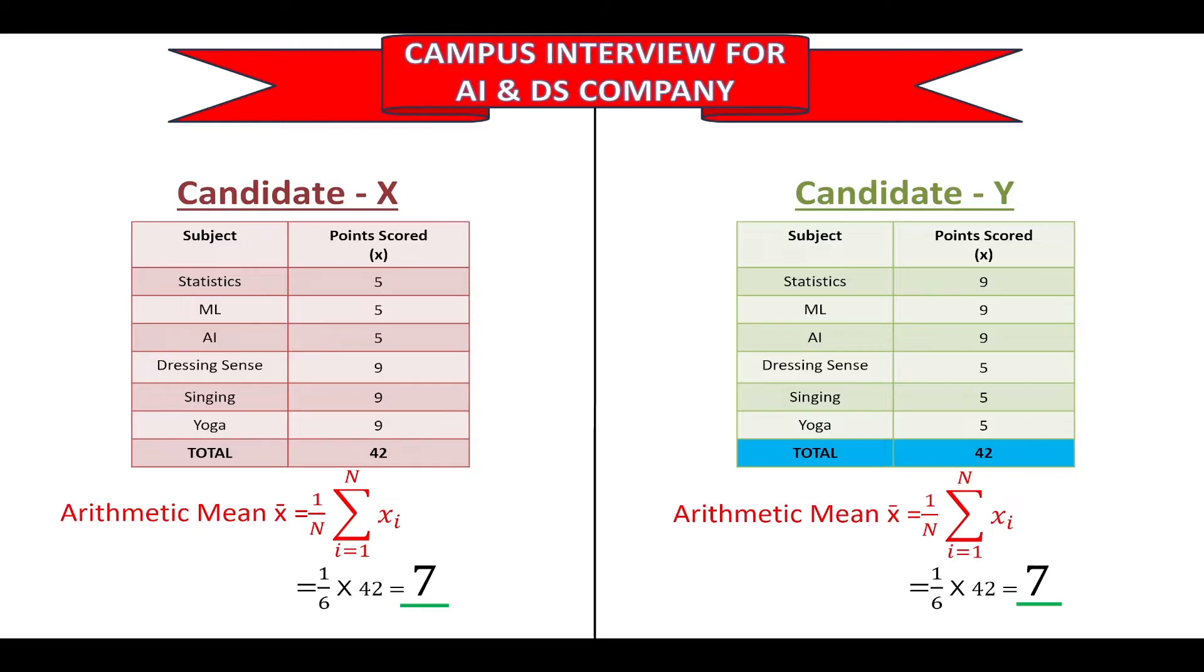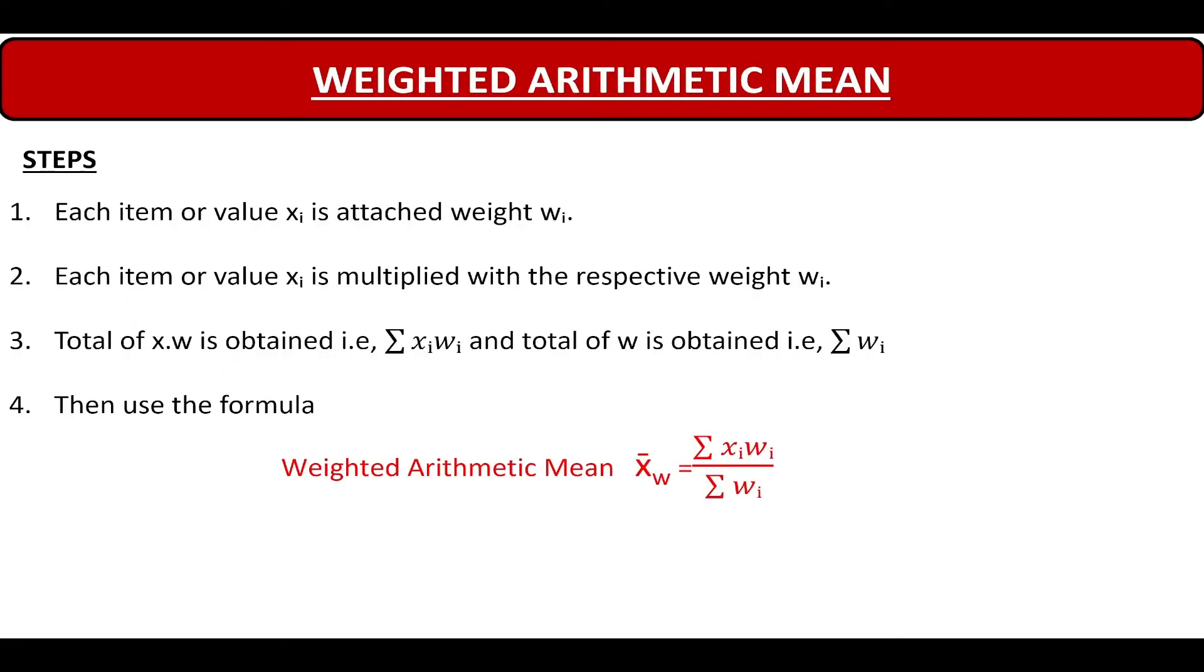Now let us see the basic steps involved. In the first step, each item or value Xi is attached to a weight Wi. You will see more of this when studying neural networks also. In the second step, each item or value Xi is then multiplied with the respective weight Wi. Then the total of X into W is obtained, that is summation of Xi Wi, and total of W is obtained, that is summation of Wi.